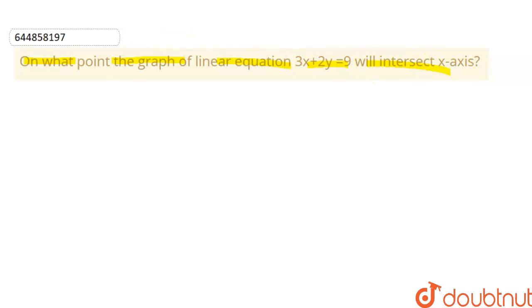So first of all, let us draw our x-axis. This is our coordinate axis. This is x-axis, this is y-axis, this is negative y-axis and this is negative x-axis. So this is x-axis and y-axis.